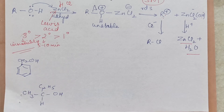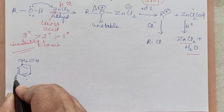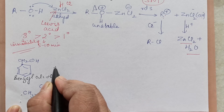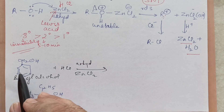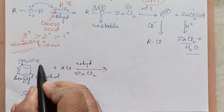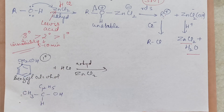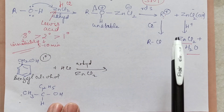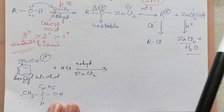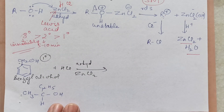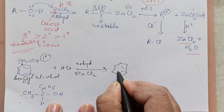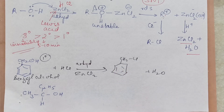Suppose you take benzyl alcohol — CH2OH group attached to benzene — with Lucas reagent (HCl + anhydrous ZnCl2). It is a primary alcohol, so it should not give turbidity, but it does give turbidity. Why? Because the mechanism forms a carbocation, and the benzyl carbocation is highly stable. Wherever a stable carbocation is formed, the reaction proceeds. So you get benzyl chloride plus water.